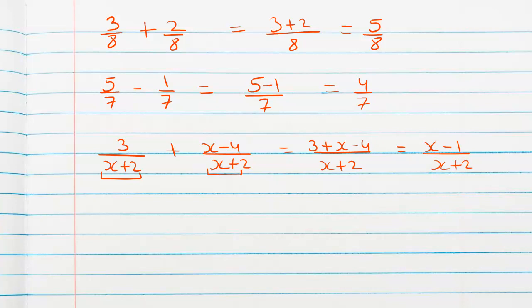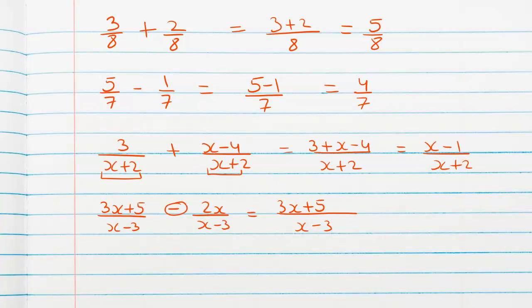Similarly, let's look at another example: (3x+5) over (x−3) minus 2x over (x−3). We write the common denominator x minus 3, then the numerator 3x plus 5 minus 2x. This gives 3x minus 2x which is x, so the answer is (x+5) over (x−3).